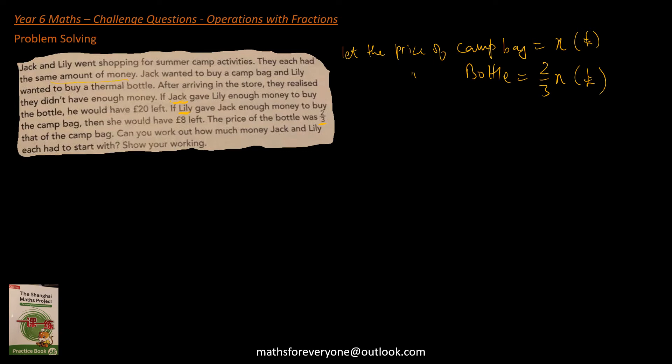So Jack's money, Jack's money equals, if Jack gave Lily enough money to buy the bottle, so the price of the bottle plus 20. So that would be two-third x plus 20.